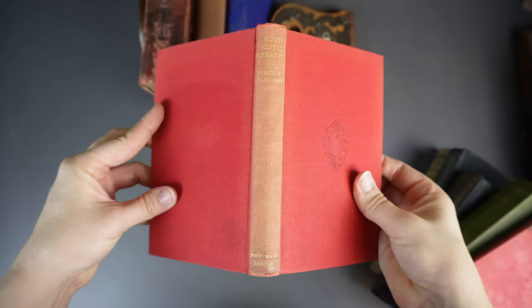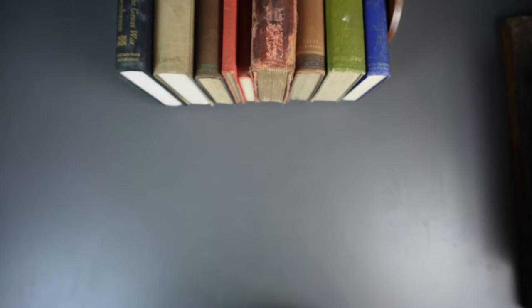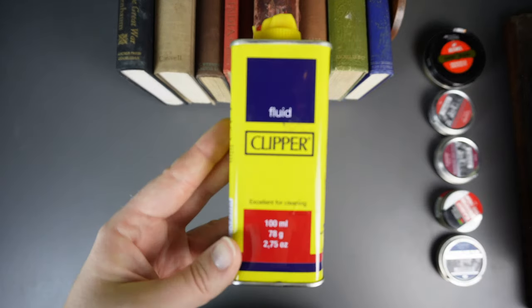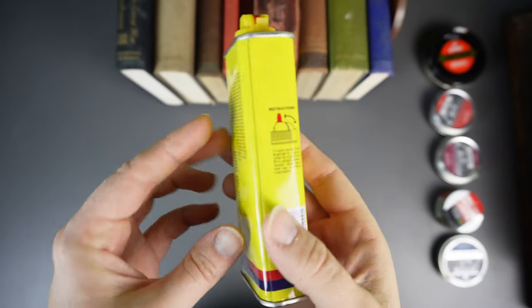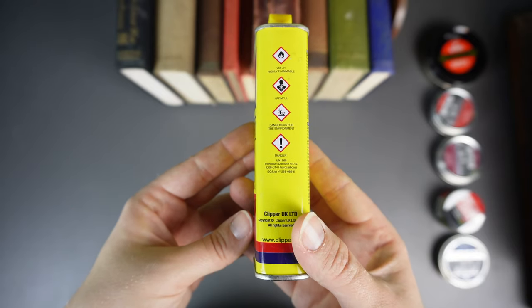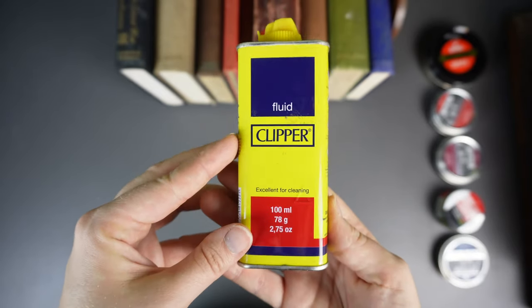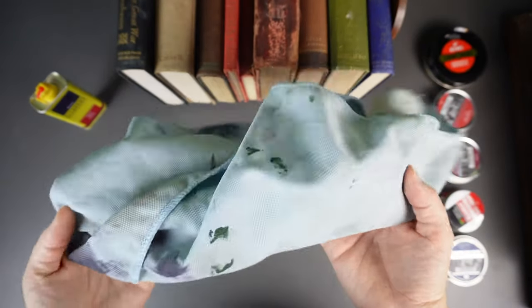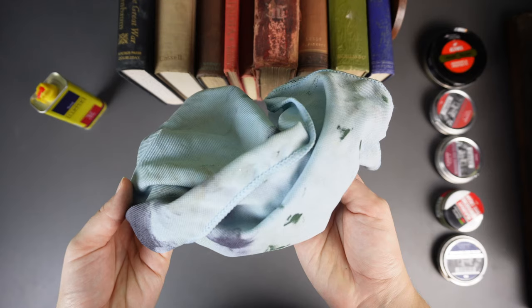To restore the color to these books, we will need three things. One, some shoe polish of an appropriate color. Two, lighter fluid. Please, please be careful with this. Make sure you are in a well-ventilated area away from any open flames. And if you are underage, please ask an adult to help you. And finally, you'll need one or two cloth rags you won't mind getting ruined.